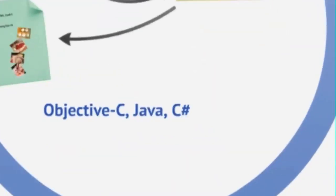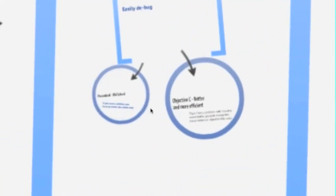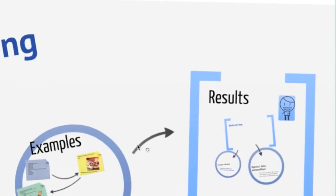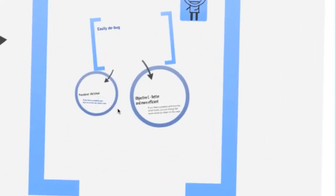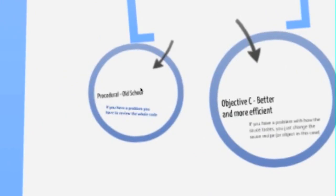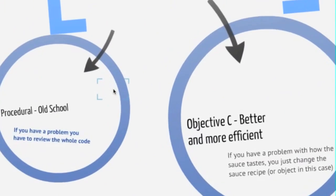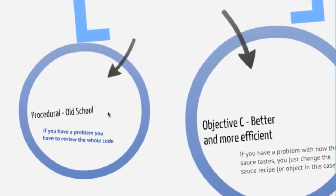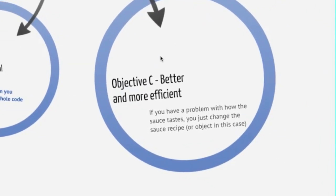Here are the results: it's easier to debug objective language, but procedural is old school. With old school, if you have a problem you have to review the whole code. If you want to make whole wheat pizza dough, you have to go through the whole code and find where to replace things. Objective C is more efficient - if you have a problem with how the sauce tastes, you just change the sauce recipe or the object in that case.